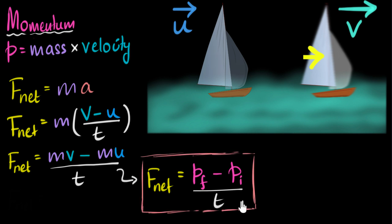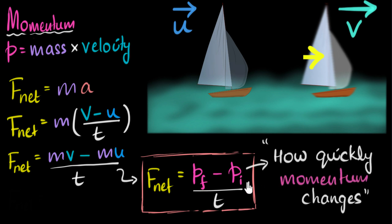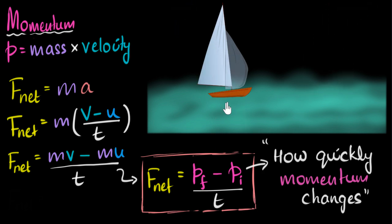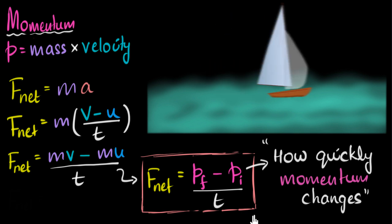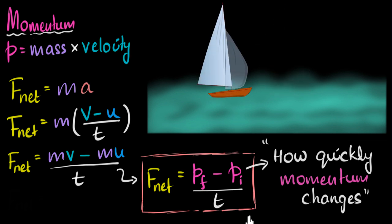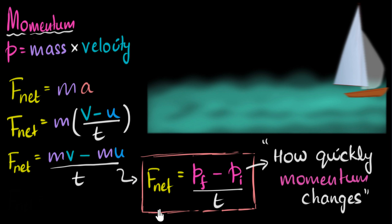What is this equation telling us? Just like change in velocity divided by time tells us how quickly velocity changes, here we have change in momentum divided by time — so the right-hand side tells us how quickly the momentum of an object changes. And the equation says that equals the net force. This means if the momentum of a body changes very quickly, a big force is acting on it. On the other hand, if momentum changes very slowly, a small force is acting on it.